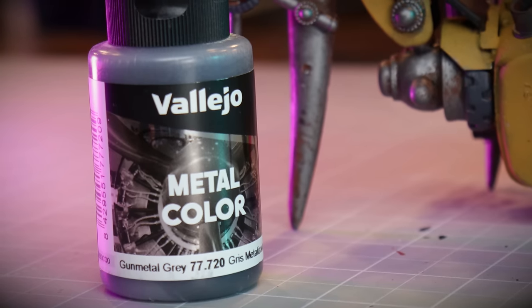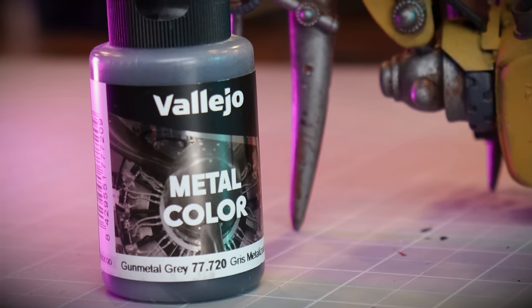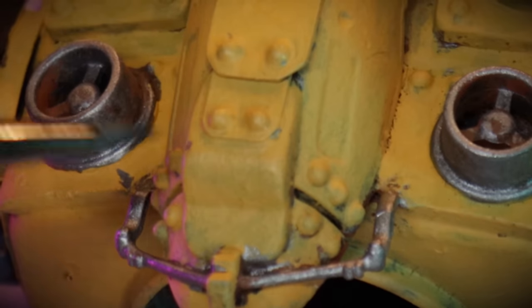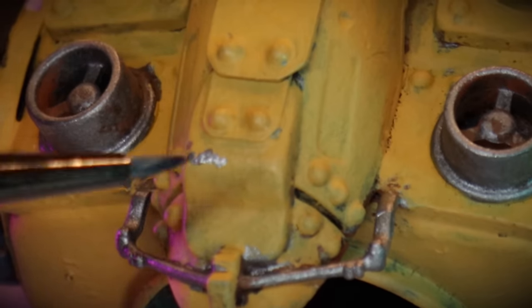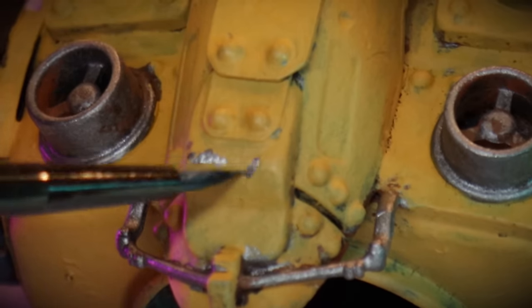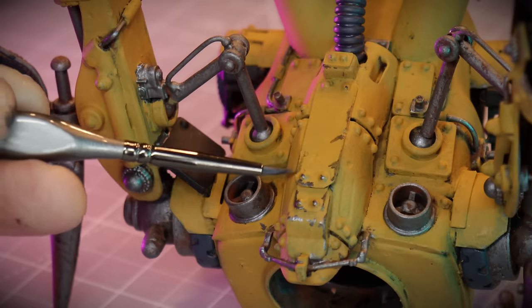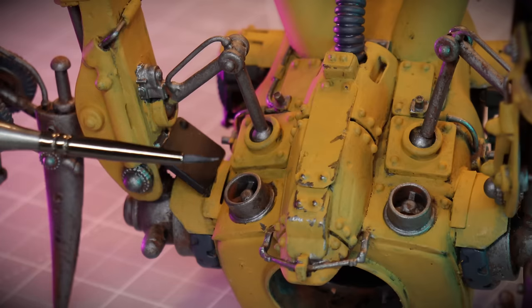Usually when I paint something like this, I leave little gaps in the paint work to look like chips and things. But because this yellow was so bad, I had to cover the entire thing. And now I'm going to add the chips manually with some gunmetal over the top.